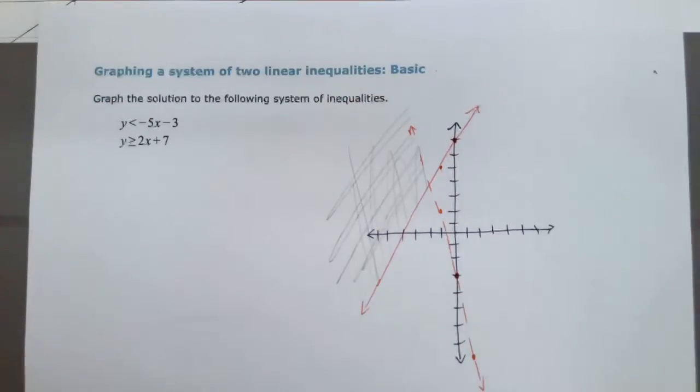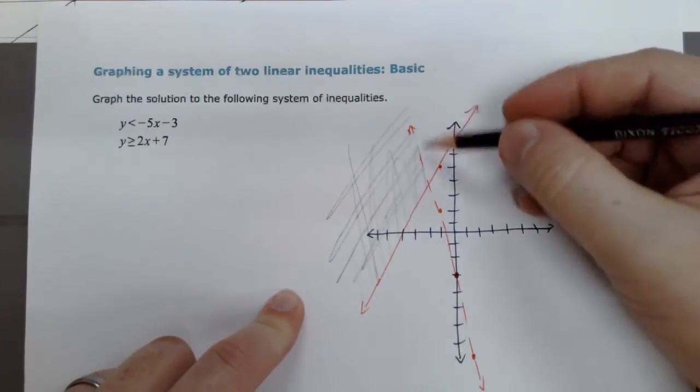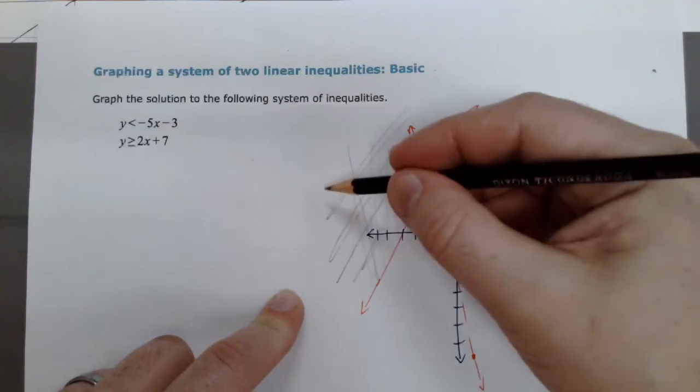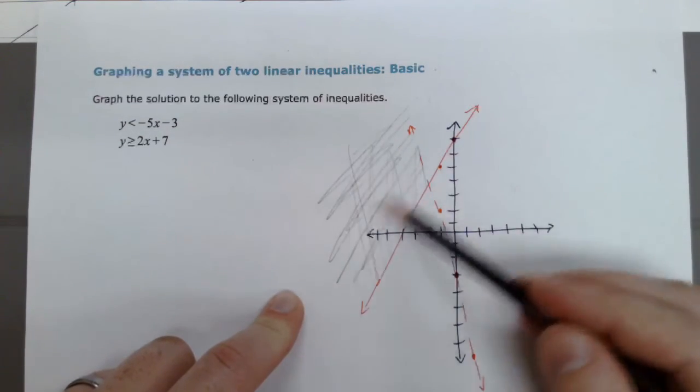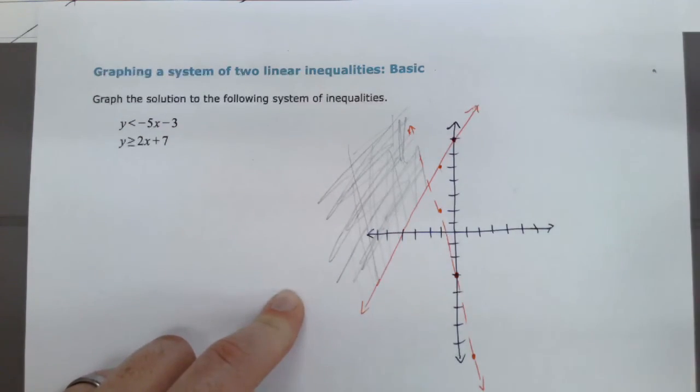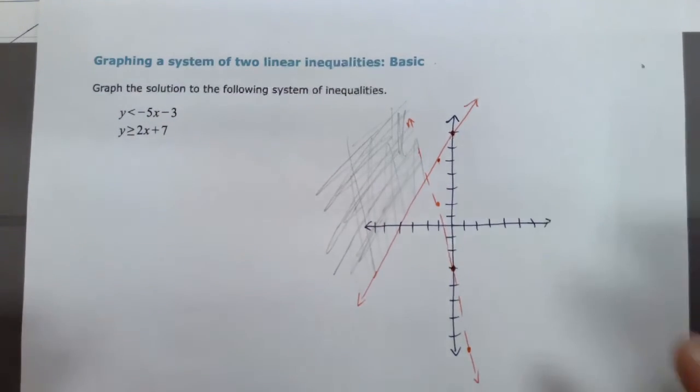So, my final shaded region is, because if you notice here, we kind of have an upper, lower, right, and left region. It's just this left region where I shaded both lines. So, that's the only shaded region you leave when you're doing a system of inequalities.